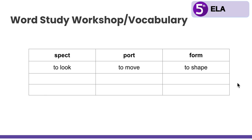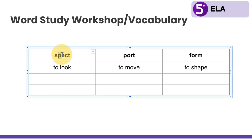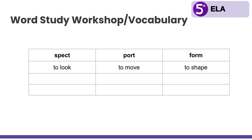Now when you're ready to continue, the first thing we're going to do is write down what each one of these roots means. The root spect means to look — to look at something — so any word that has spect in it has something to do with looking at something or what something looks like. The next one is port, and any word that has port in it means to move, so it has something to do with moving something. And lastly, we have form, which means to shape, so any words with the root form have to do with the shape of something or how something is shaped.